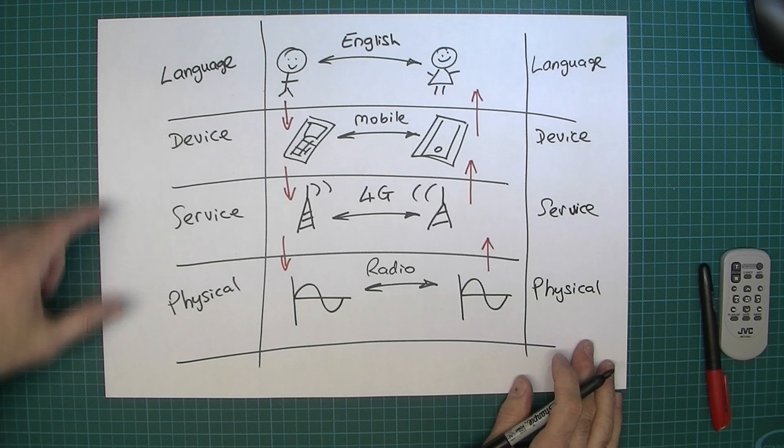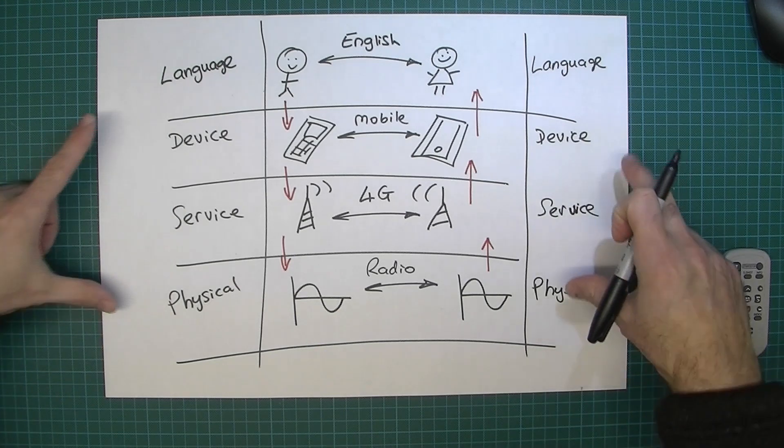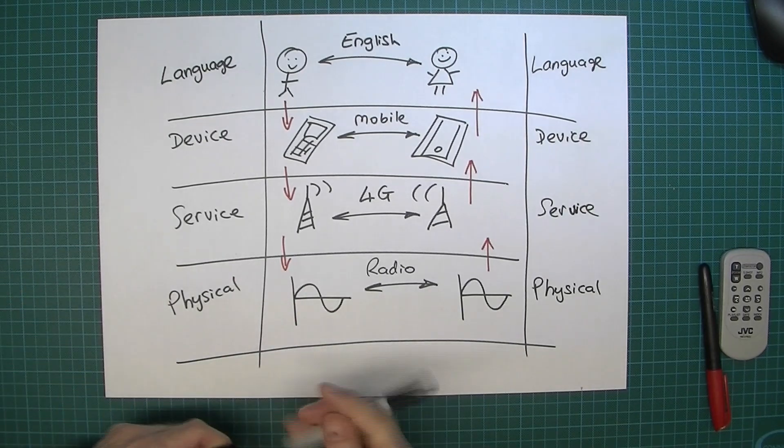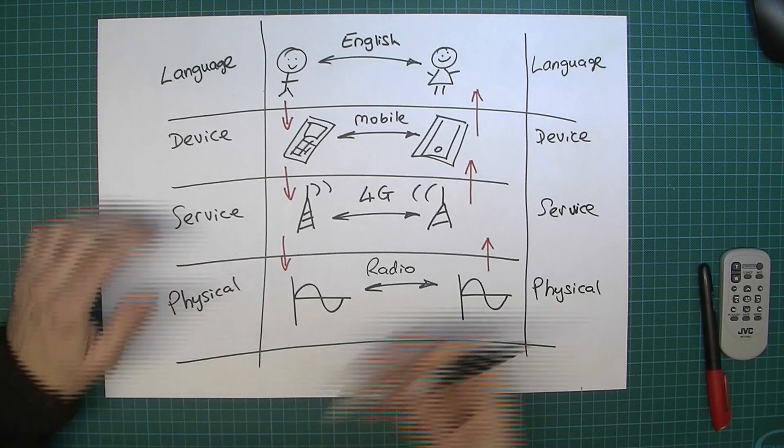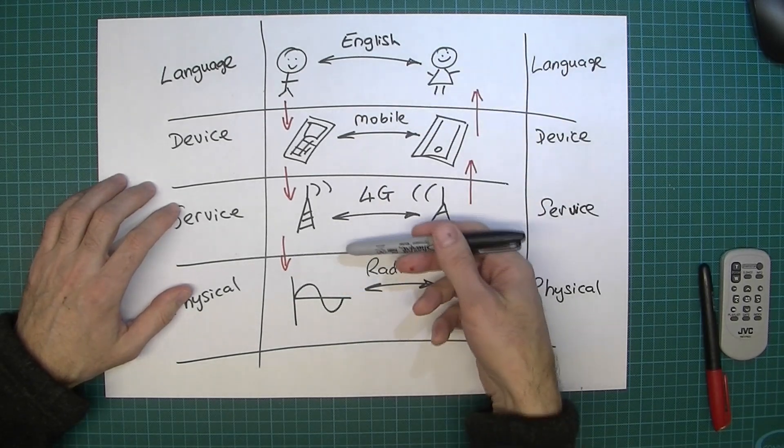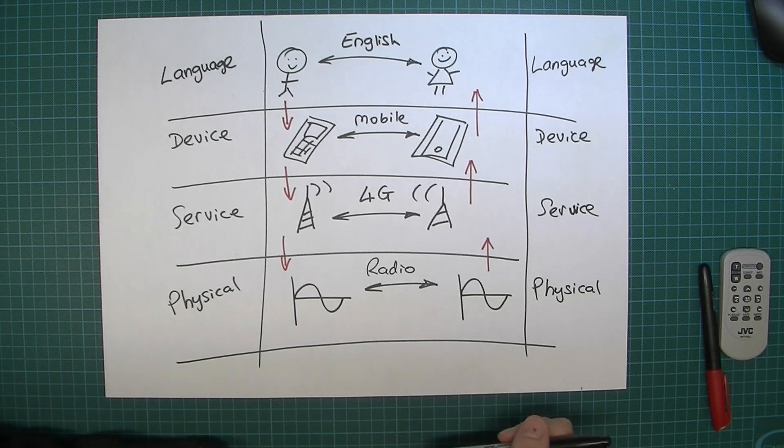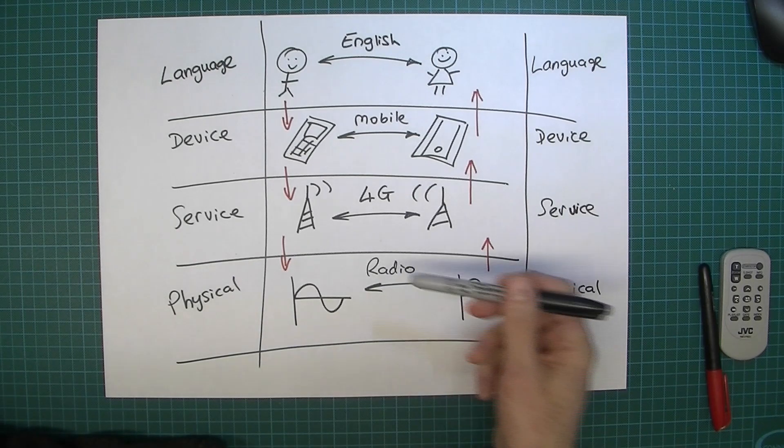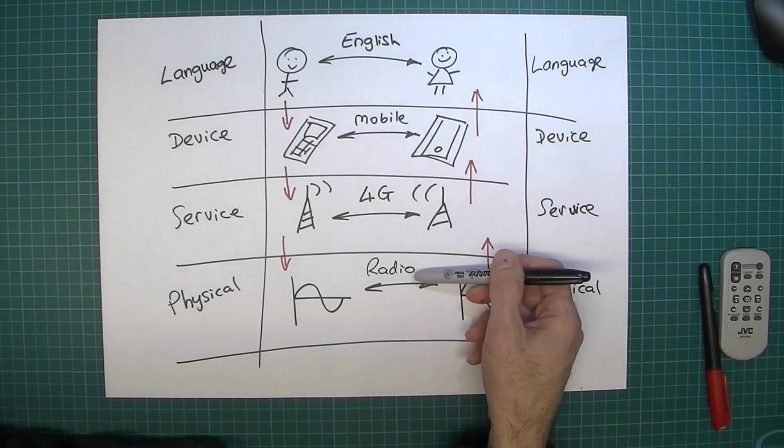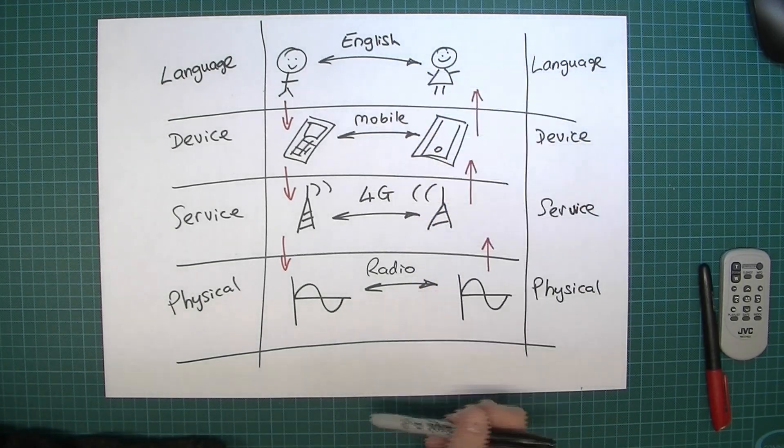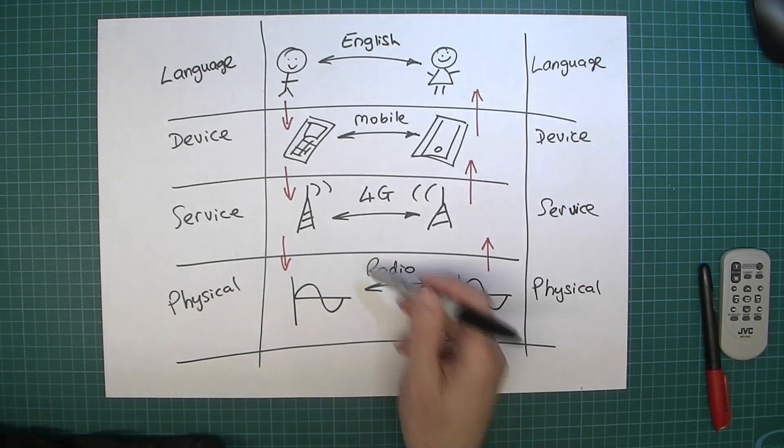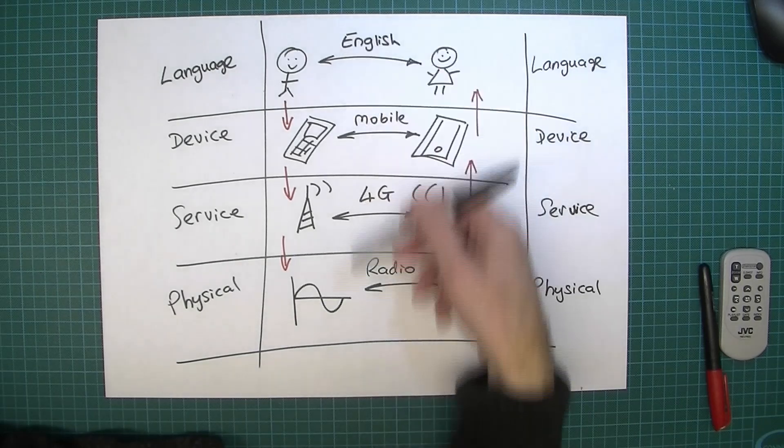So hopefully you now understand about the whole concept of the protocol stack. And also, and this is really important, you understand the concept that you can change one layer in the protocol stack without necessarily having to change any of the others. For example if we decided that we were going to change from radio transmission to fiber optics it wouldn't make any difference to anything above. If we were to change from 4G to 5G equally we might still not notice that at any other level.